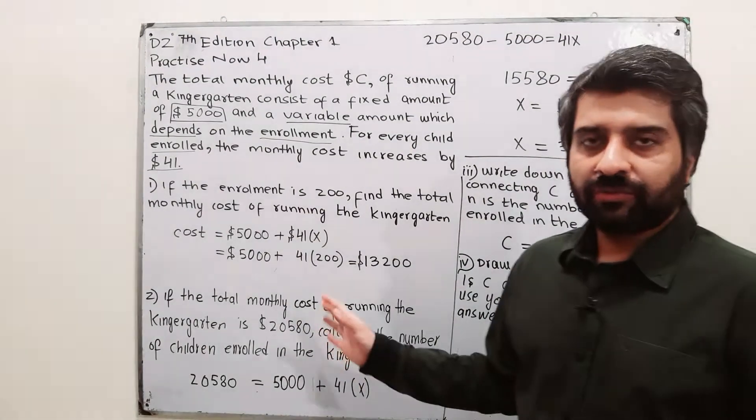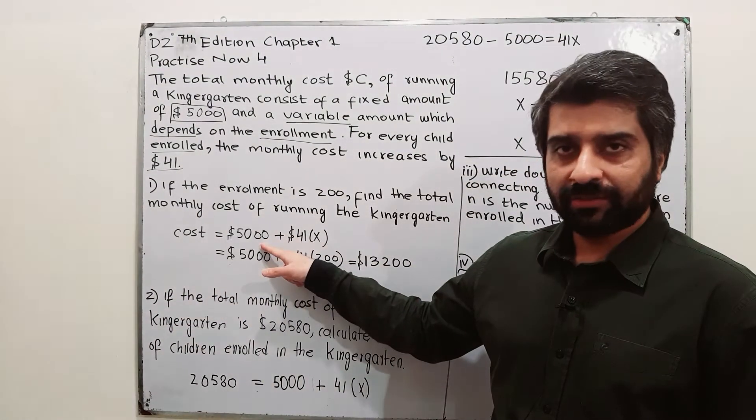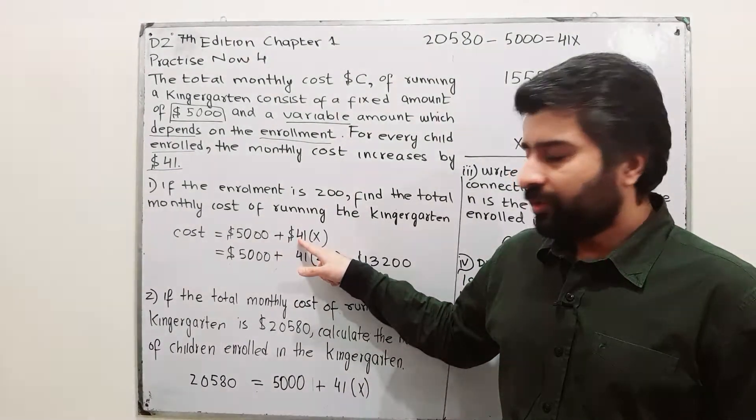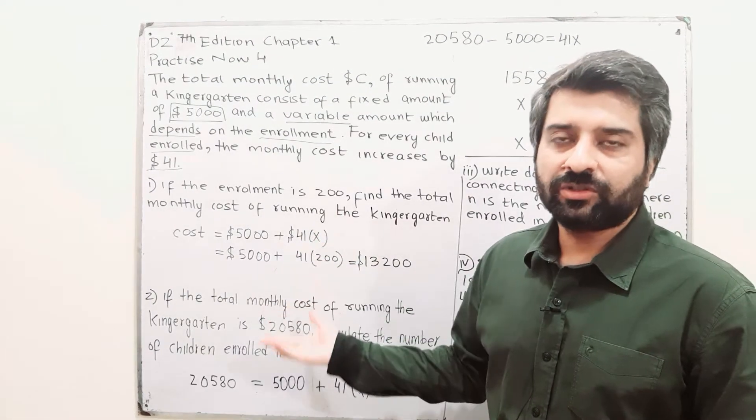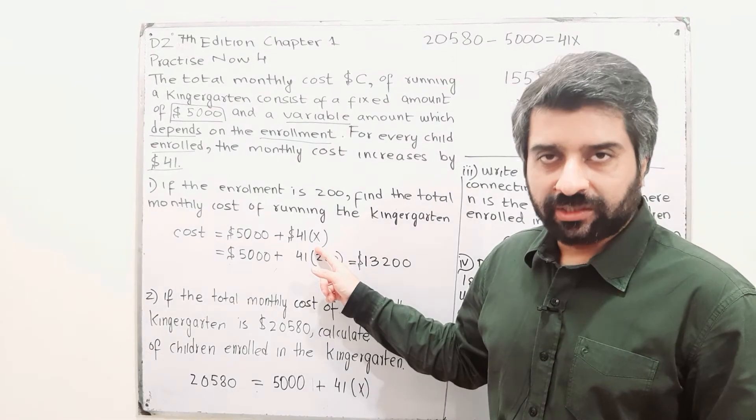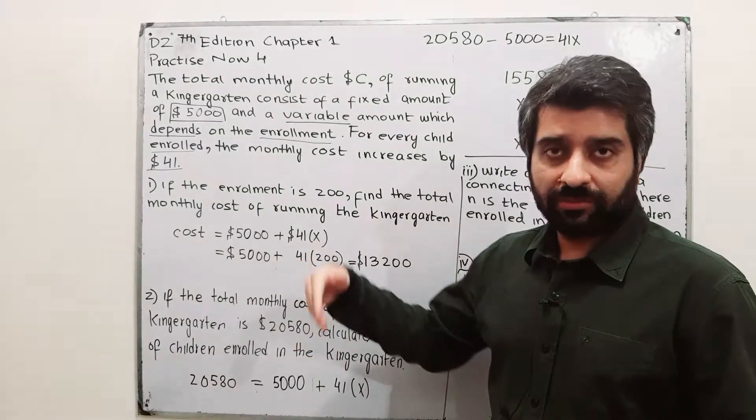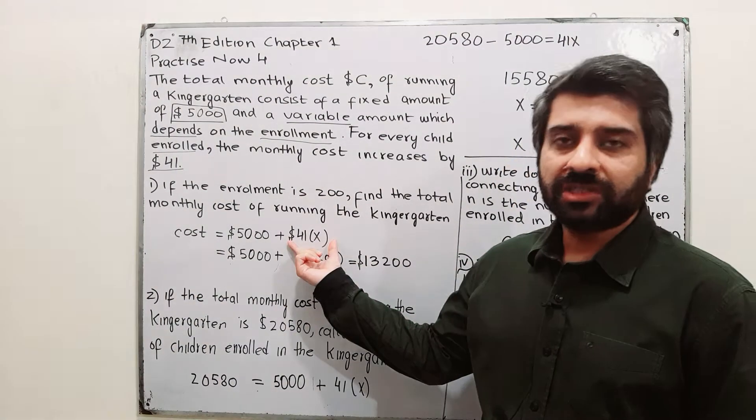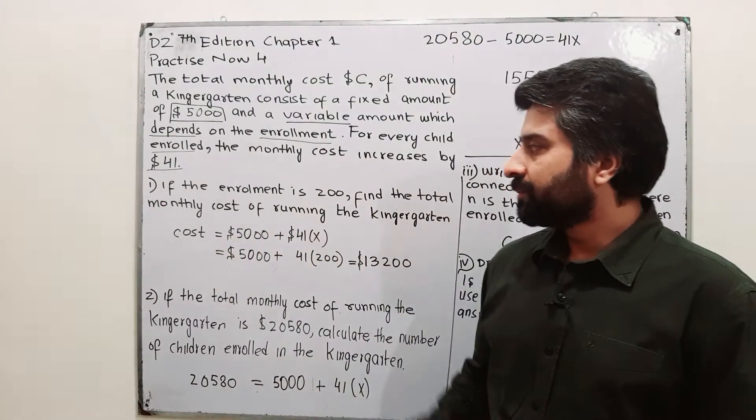The expression or equation for this one becomes total cost that is equal to fixed cost that is $5,000 plus $41 into x. Why into x? Because this is variable. If your student is 1, x will be 1. If the students are 2 in number, then x will be 2. So, 41 into 2, this will increase. So, this cost will keep on changing depending on the number of students. However, this one is fixed.